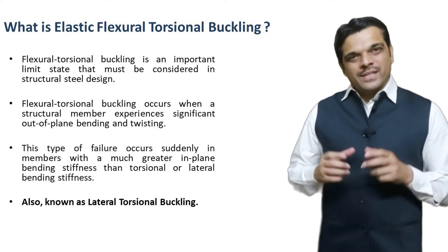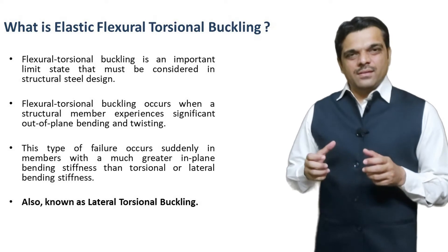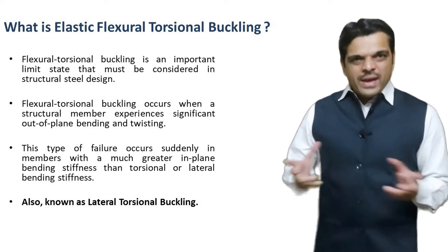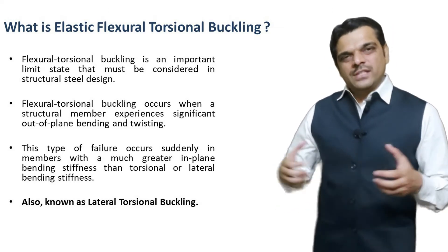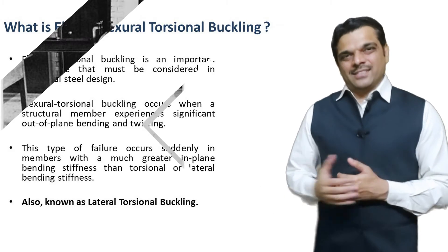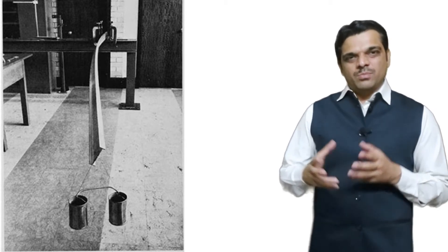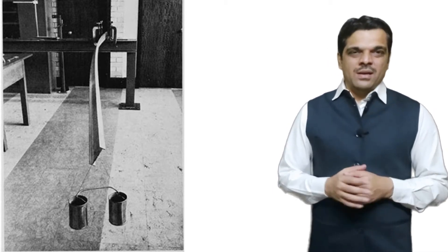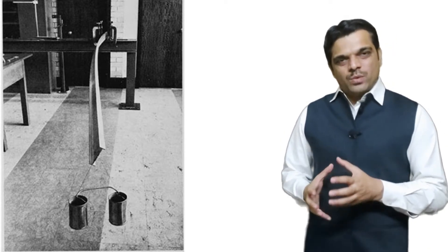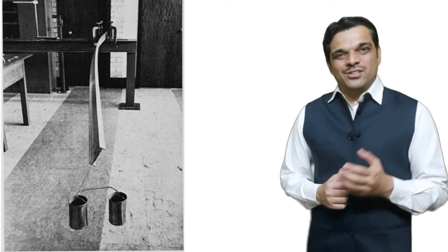Elastic flexural torsional buckling is critical for members that have much greater in-plane bending stiffness compared to lateral stiffness. Whenever we apply in-plane bending moment to this kind of member, it has a tendency to buckle in the lateral direction. As shown in this figure, a cantilever beam with a point load experiences in-plane bending moment, but we can observe twisting of the member along with lateral movement. That is why this limit state is called elastic flexural torsional buckling.